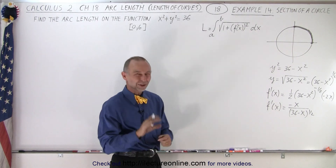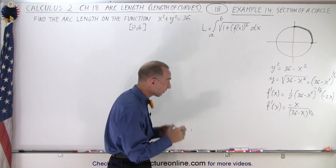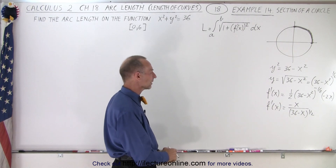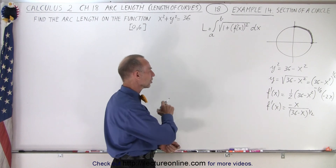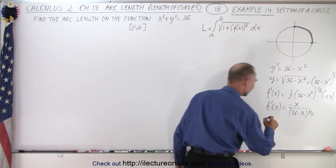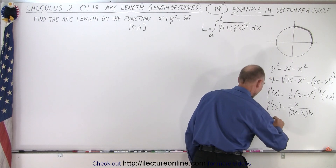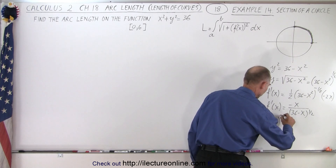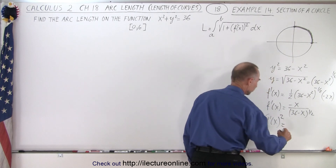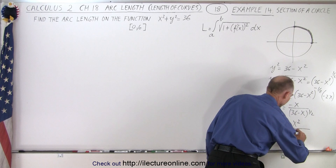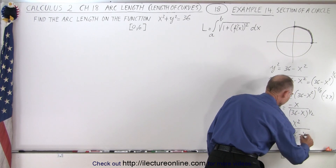We don't need a second derivative here, so this form is good. Now we're going to square this: f prime of x quantity squared equals x squared divided by 36 minus x squared. That goes into our general formula for arc length.